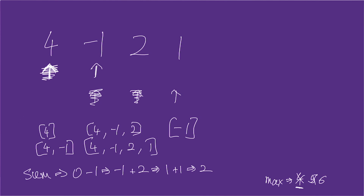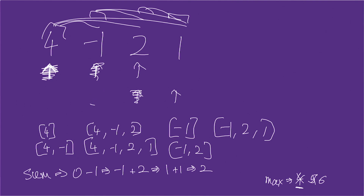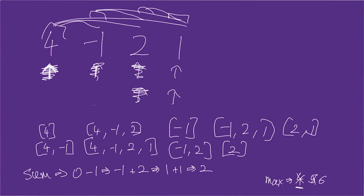Basically we're choosing the start of the array and then expanding it using loop two. If we keep doing that we get all possible subarrays. Continuing: we'd evaluate [-1], [-1, 2], [-1, 2, 1], then [2], [2, 1], and finally [1] as the last subarray. This gives us the complete brute force algorithm.